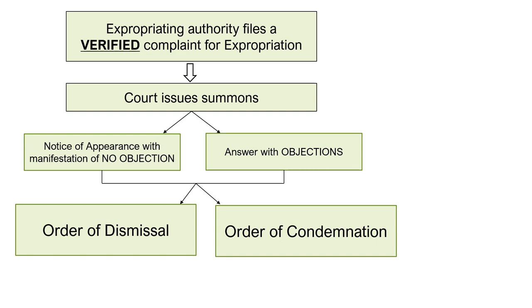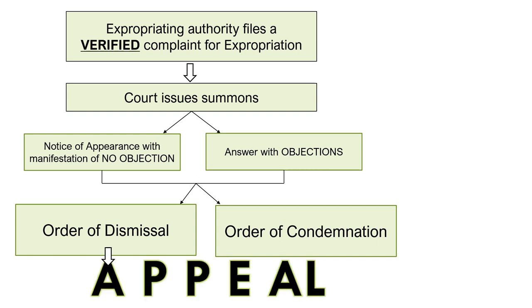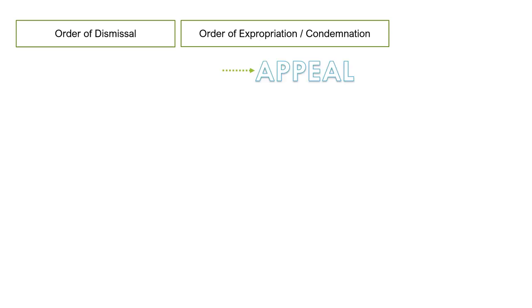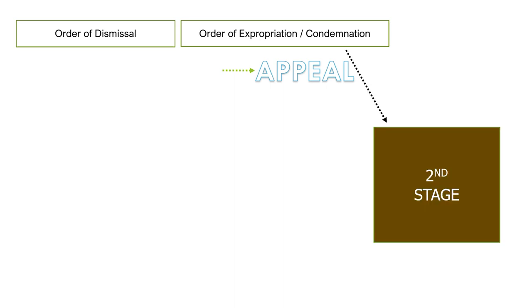An order of condemnation is the same as an order of expropriation — in American jurisprudence, 'order of condemnation' is the term more commonly used. If you are the government and your action for expropriation is dismissed, your remedy is to appeal. If you are the defendant and there is an order of expropriation or condemnation, your remedy is also appeal. This completes the first stage. Take note that even if there is an appeal from the order of expropriation or condemnation, it will not prevent the court from proceeding to the second stage.